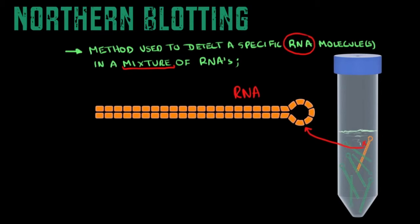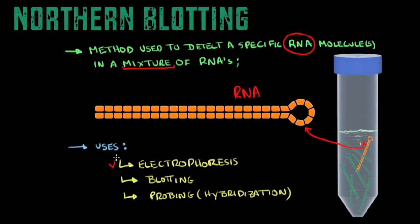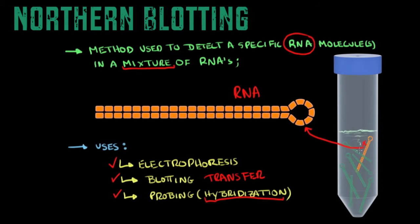Northern blotting follows a similar protocol to southern blotting, but it also uses other methods we use in biology in general. These methods are electrophoresis, because you need a way to separate the RNA molecules by size mainly. The second thing is blotting, which is basically when you transfer molecules from one membrane to another. Another method used within northern blotting is probing, done through hybridization. Probing is basically when you want to find a target molecule — you have to label it, either through a radioactive or fluorescent label — and the way you do so is through hybridization.